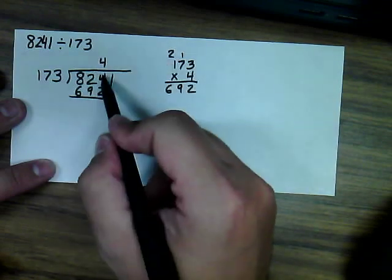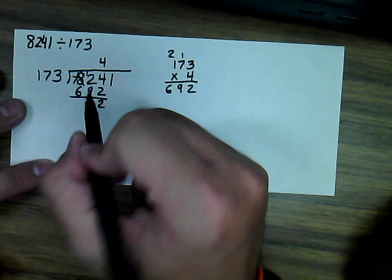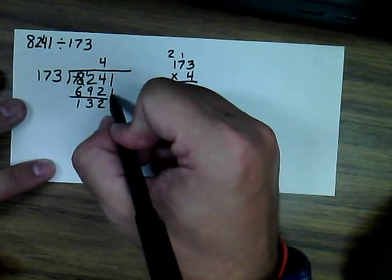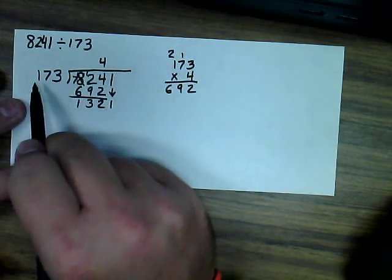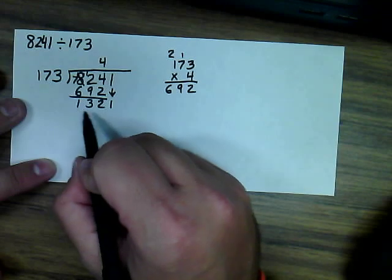And we can go ahead and subtract. That was a 4 that goes there. 4 minus 2 is 2. We're going to borrow here, make that a 7, make that a 12. 12 minus 9 is 3, and 7 minus 6 is 1. We're now going to bring down our next item.